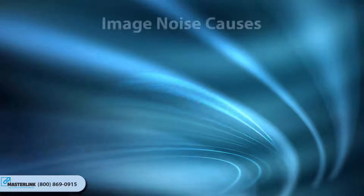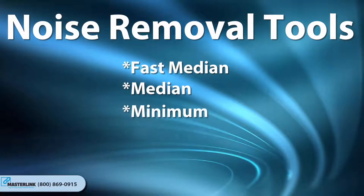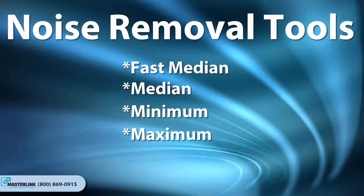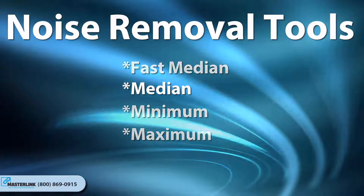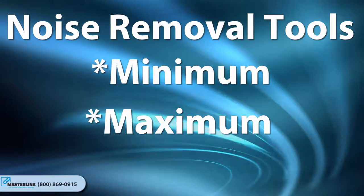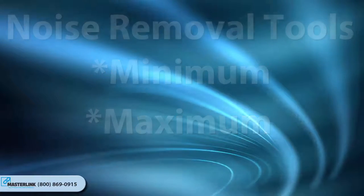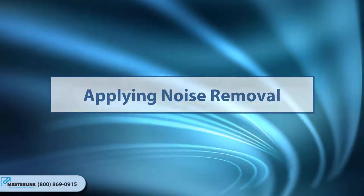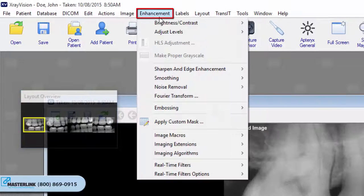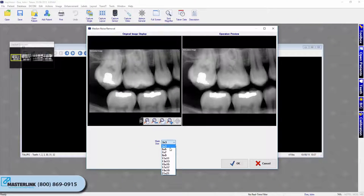Noise Removal. Noise in an image can be caused by factors such as dust, scratches, or image static. A variety of noise removal algorithms are provided: Fast Median, Median, Minimum, and Maximum. In most cases, median noise reduction results in the best image quality. The minimum and maximum filters are usually best on larger images due to their fast computation speed. Excessive noise reduction leads to a loss of detail. To apply, select Median, Minimum, or Maximum from the Enhancement, Noise Removal menu. The Applicable Noise Reduction dialog box displays. Click OK to apply, then click Save to store the changes.